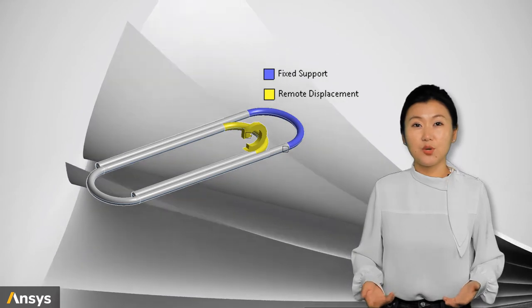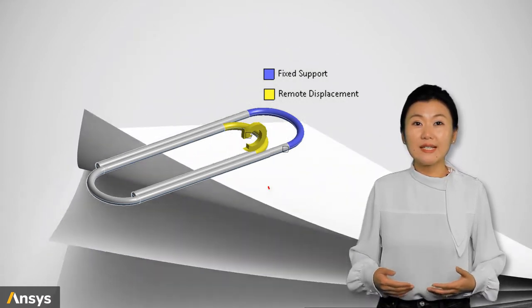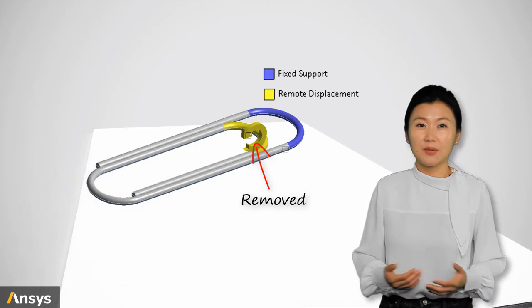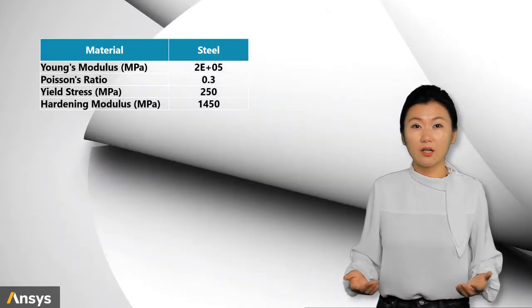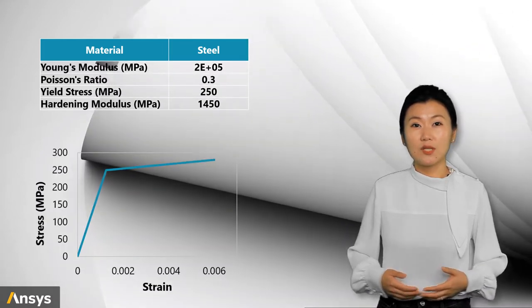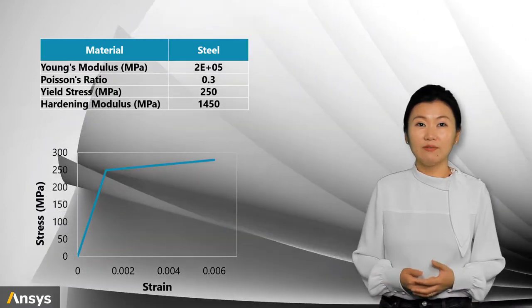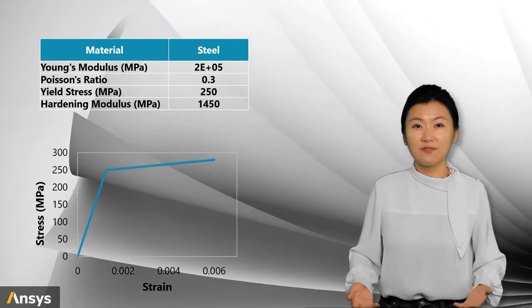After the paper clip reaches the design shape, we will release the displacement control so that it can freely return to a final position. Since the paper clip is made of steel wire, here we will use the steel material model with metal plasticity. The steel material yields when Von Mises stress reaches 250 MPa.